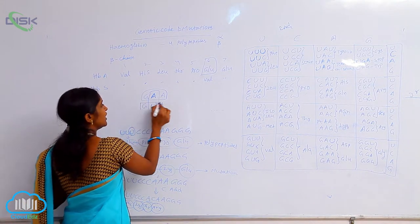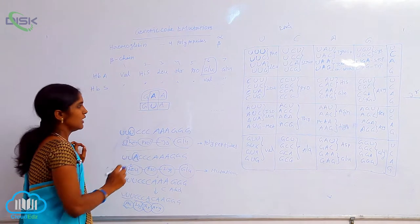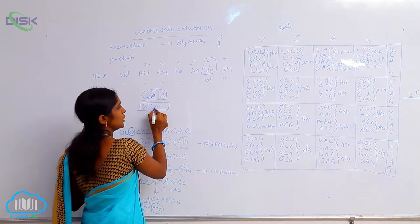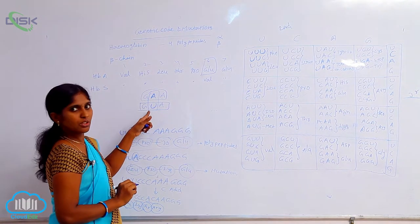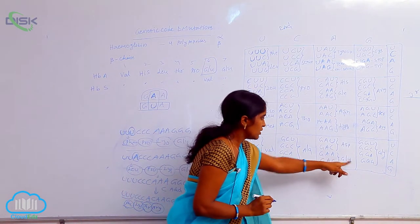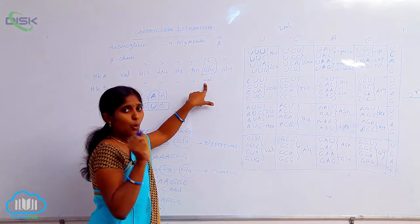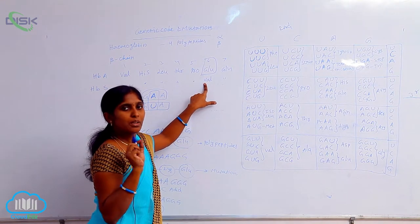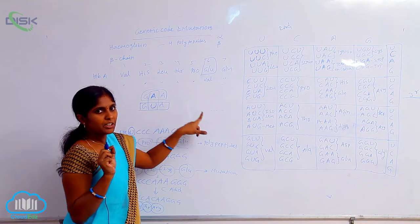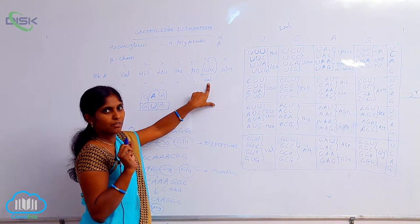Then the codon is changed. It changed as GUA. What does GUA code? GUA codes valine. It means the valine is changed. Only one single base pair alteration can lead to the identification of amino acid valine.